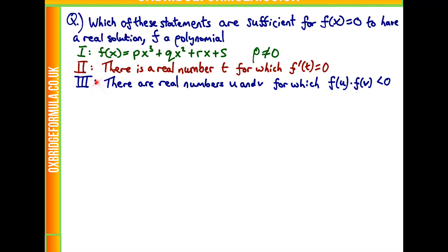We want to work out which of these three statements is a sufficient condition for f(x)=0 to have a real solution where f is a polynomial. The first one is f(x) is of the form px³ + qx² + rx + s, with p≠0. Statement 2 is saying there's a real number t for which f'(t)=0. Statement 3 is saying there are real numbers u and v for which f(u) times f(v) is less than 0.